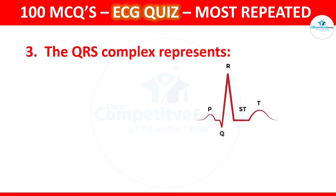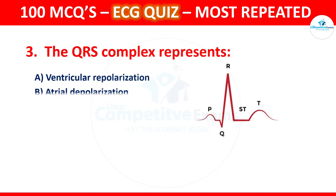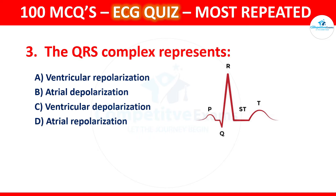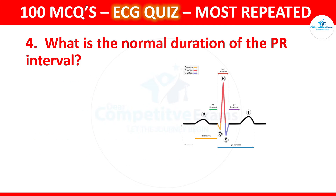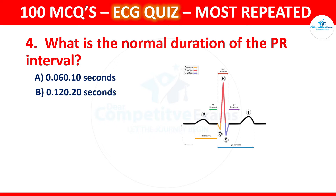Question 3: What does the QRS complex represent? Options are ventricular repolarization, atrial depolarization, ventricular depolarization, or atrial repolarization. The correct answer is ventricular depolarization. The QRS complex indicates the depolarization of the ventricles, leading to their contraction.